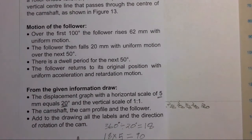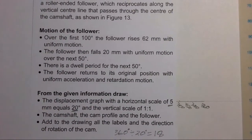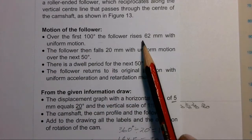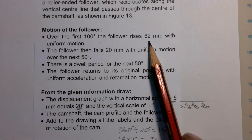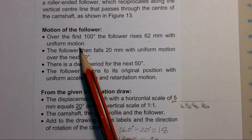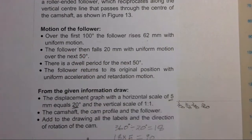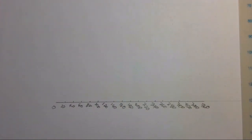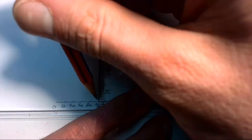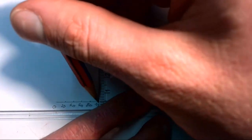Going back to the question to look at how the motion works: over the first 100 degrees the follower rises 62 millimeters with uniform motion. Since uniform motion is just a straight line, we immediately draw a construction line going up from 100 degrees, which is where that first motion ends.